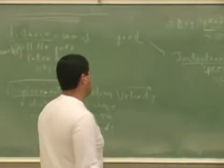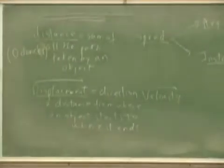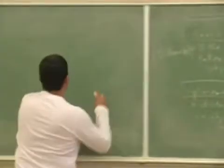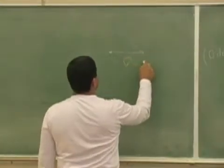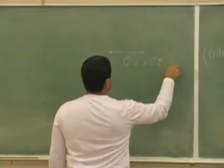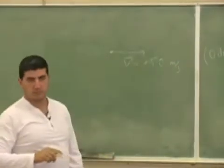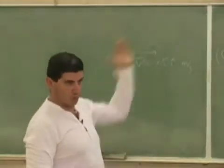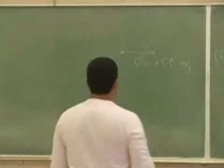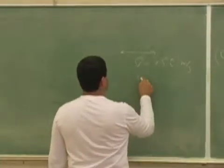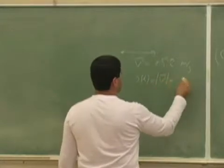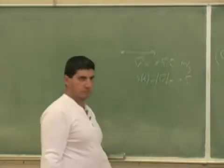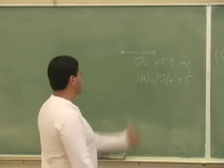So for example, if you're traveling this way, and your velocity is equal to 5i hat meters per second, okay, which means you're going to the right, then your speed, instantaneous speed, is going to be magnitude of that, which is just plus 5.